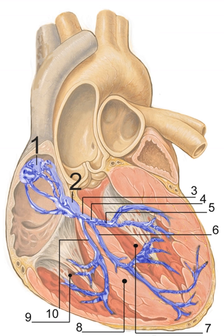The electrical conduction system of the heart transmits signals generated usually by the sinoatrial node to cause contraction of the heart muscle. The pacemaking signal generated in the sinoatrial node travels through the right atrium to the atrioventricular node, along the bundle of His and through bundle branches to cause contraction of the heart muscle.